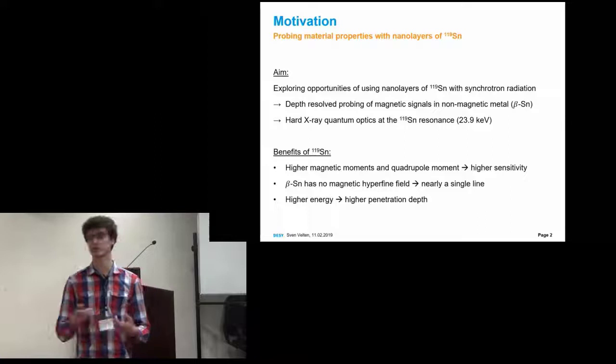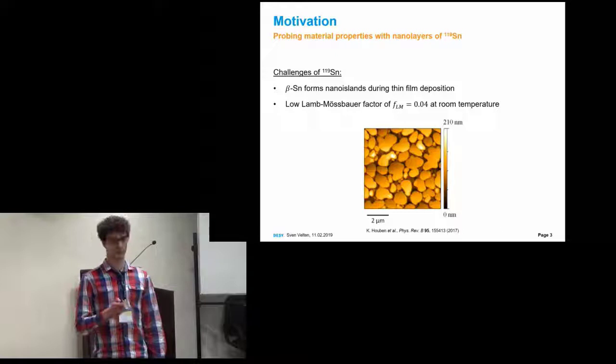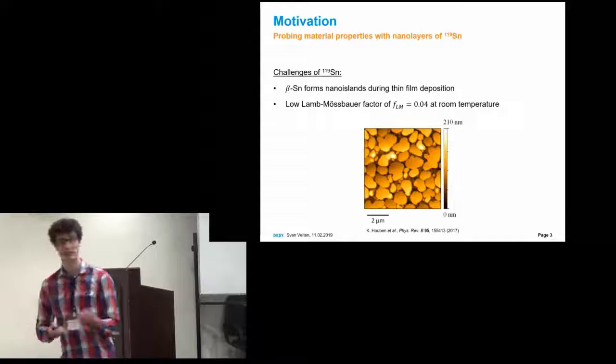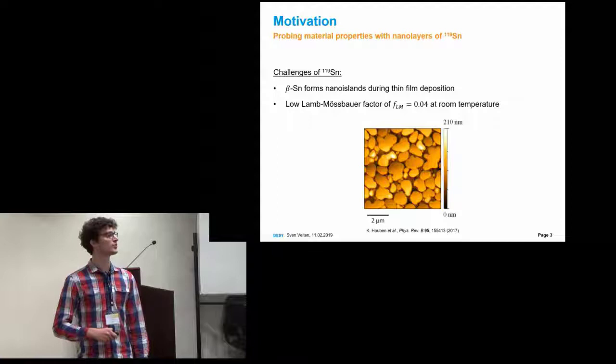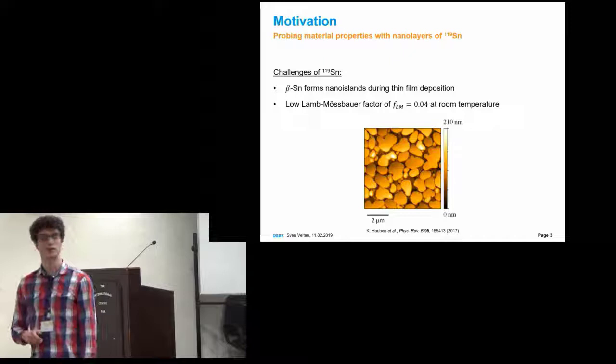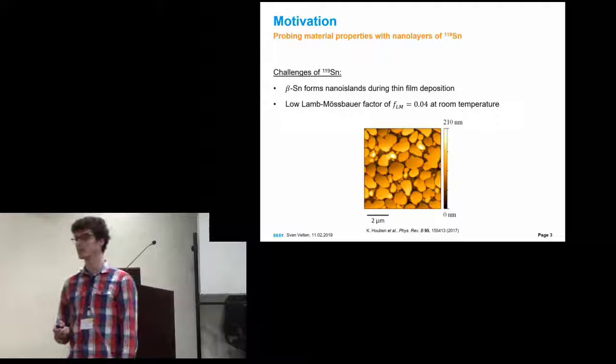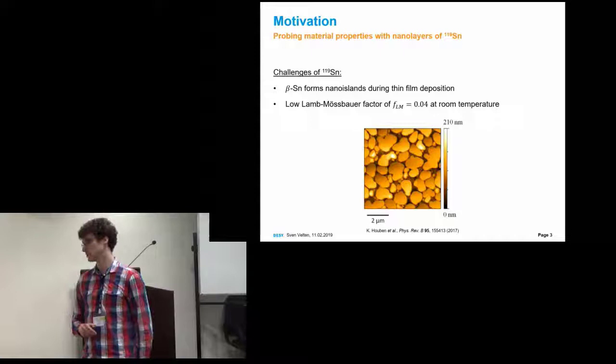There are also some drawbacks with tin, which is that beta-tin forms nano-islands when it's deposited or sputtered at normal conditions. Here, Huben et al. used this to probe phonon density of states with nuclear inelastic scattering on those nano-islands. And the second drawback is that beta-tin has a very low Lamb-Mössbauer factor of 0.04 at room temperature.